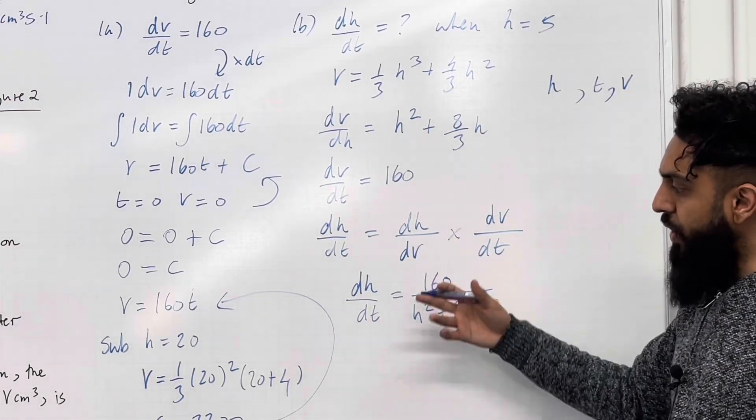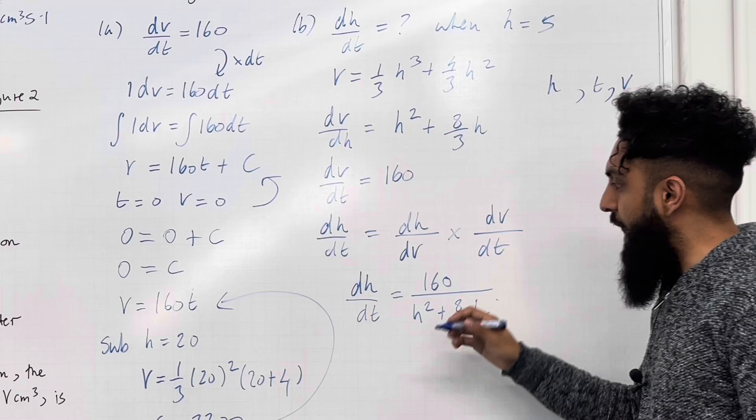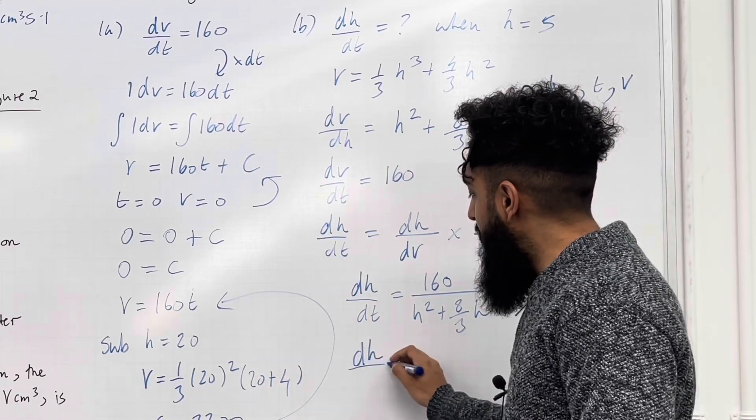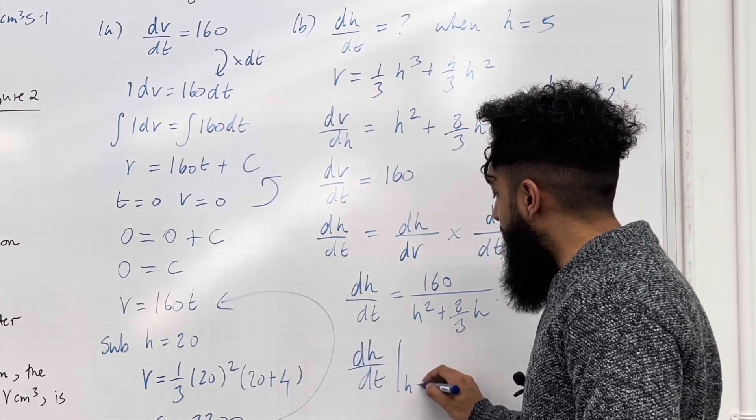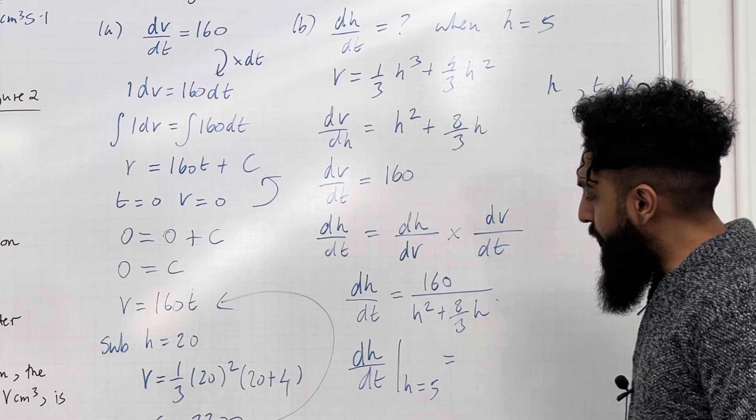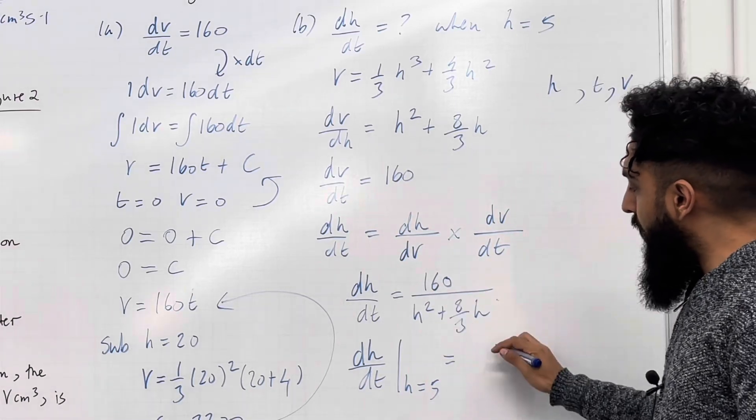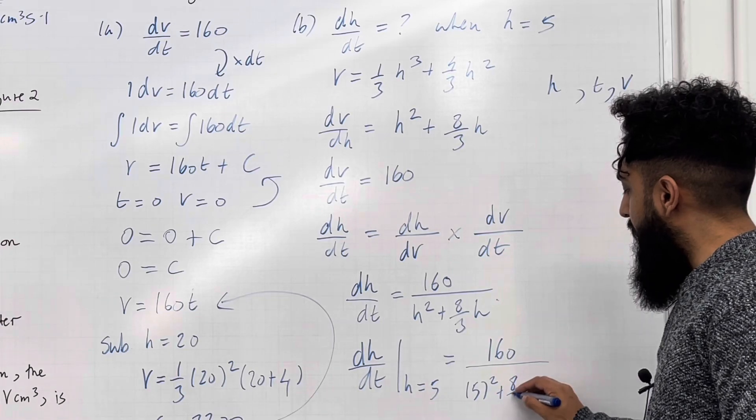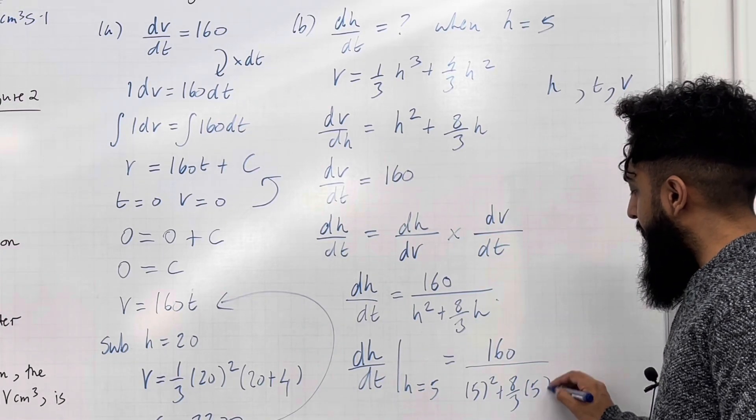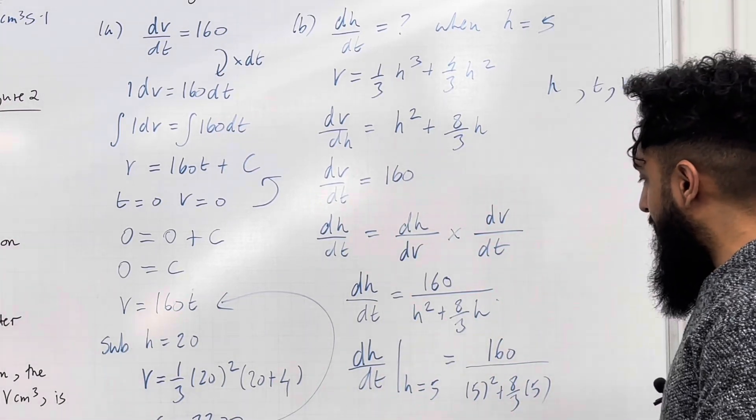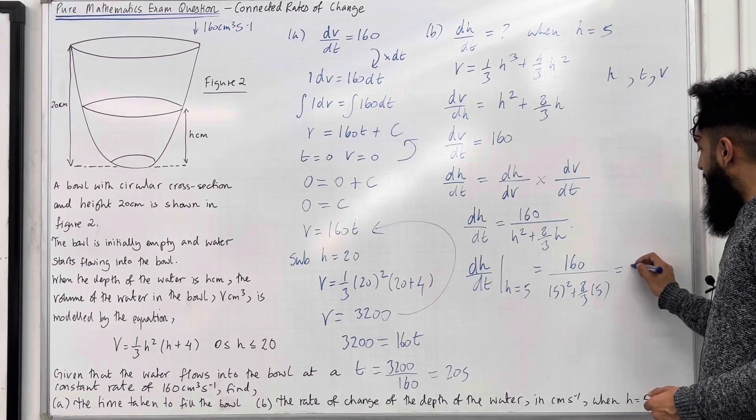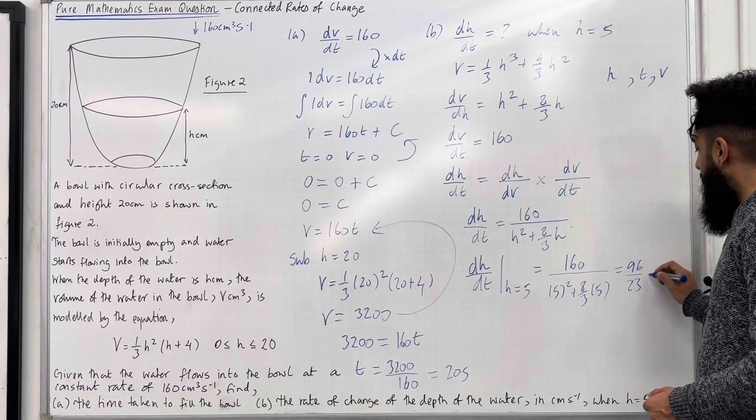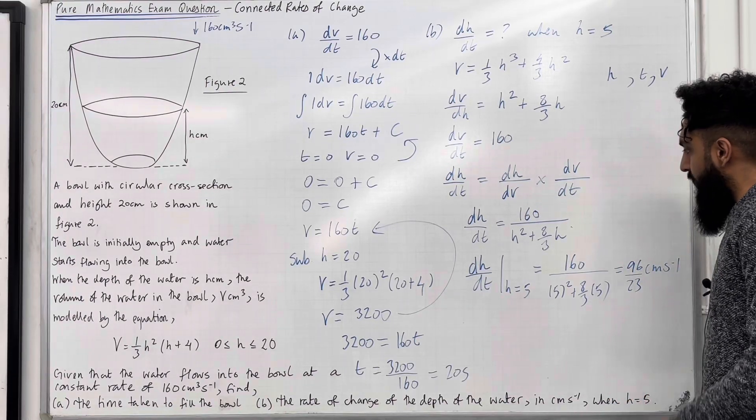Now, I can calculate dh over dt when h is equal to 5. Substitute h equal 5 into this formula. We've got 160 over (5² + 8/3 multiplied by 5). If I put this into my calculator, I get 96/23 centimeter per second.